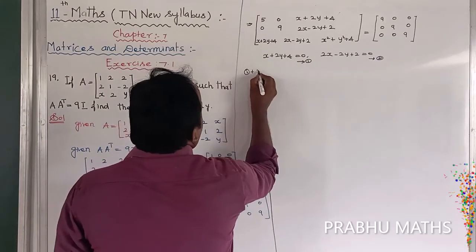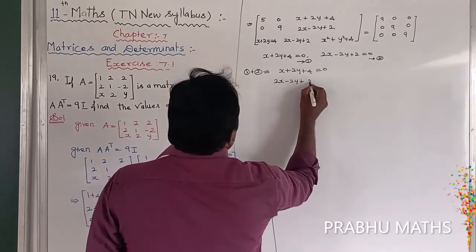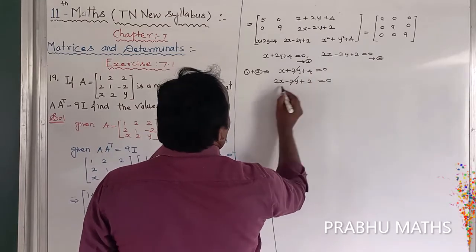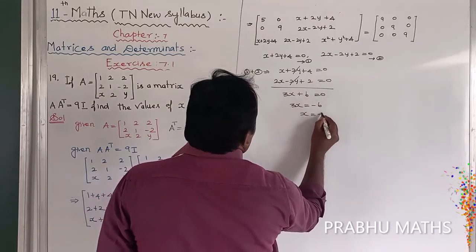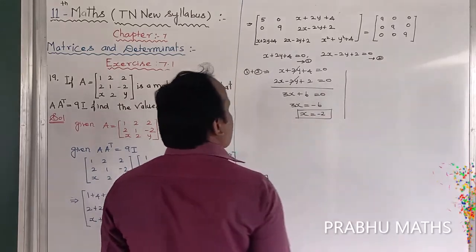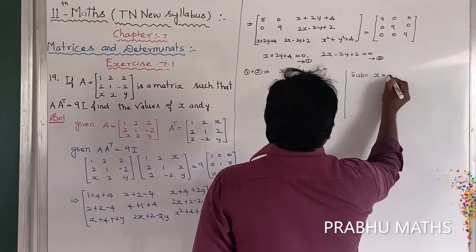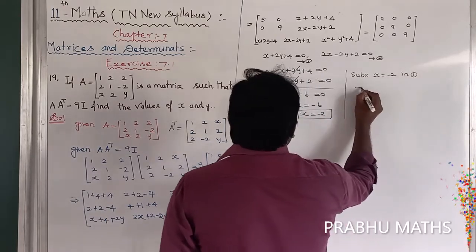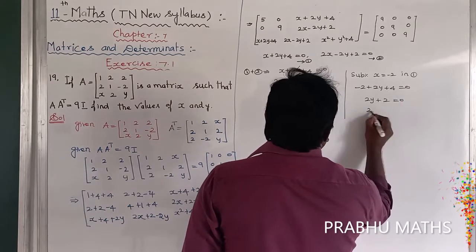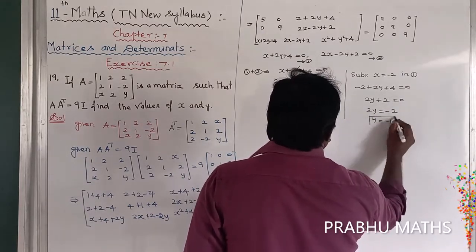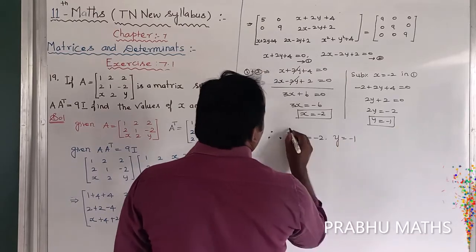Adding Equation 1 and Equation 2: (X + 2Y + 4) + (2X - 2Y + 2) = 0, the 2Y terms cancel, giving 3X + 6 = 0, so 3X = -6, therefore X = -2. Substituting X = -2 into Equation 1: -2 + 2Y + 4 = 0, so 2Y = -2, therefore Y = -1. The value of X = -2 and Y = -1.